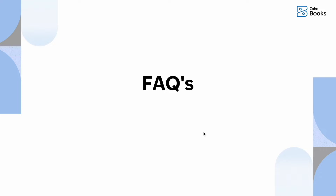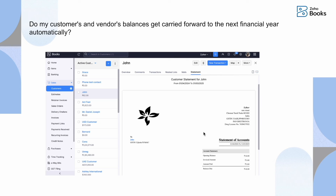FAQ: Do customer and vendor balances carry forward to the next financial year automatically? Yes — the previous year's closing balance becomes the opening balance for the next financial year, so customer and vendor balances are automatically carried forward. You can verify this by generating a report for 1st April 2024, which shows the opening balance matching the prior year's closing balance.